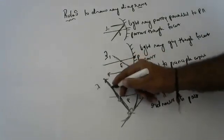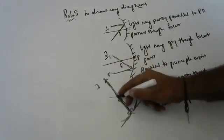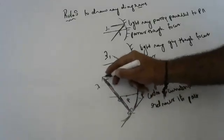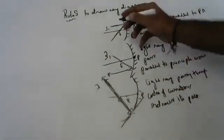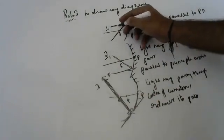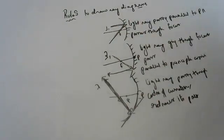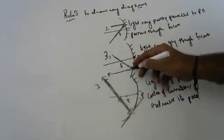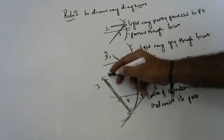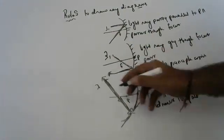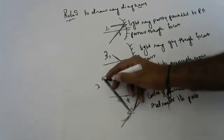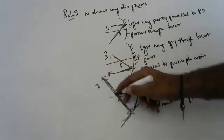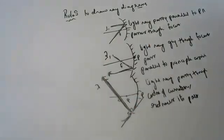So, any light ray going through the center of curvature retraces its path. Now we have three rules. Rule one: light ray parallel to the principal axis goes through focus. Rule two: light ray going through focus goes parallel to the principal axis. Rule three: light ray going through center of curvature does not get deviated.